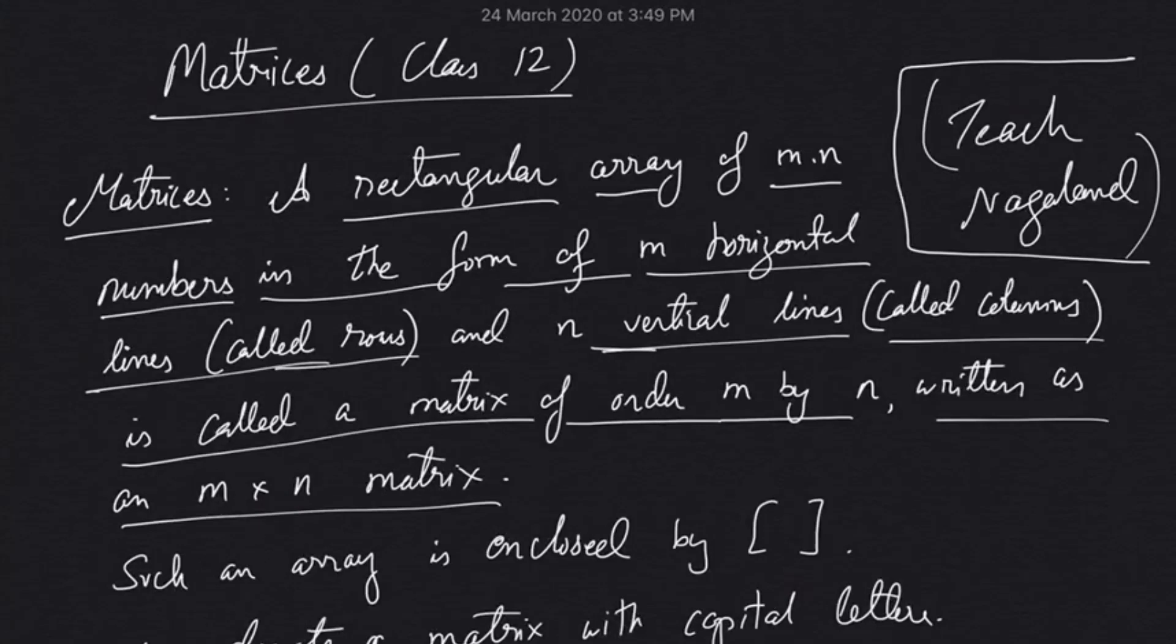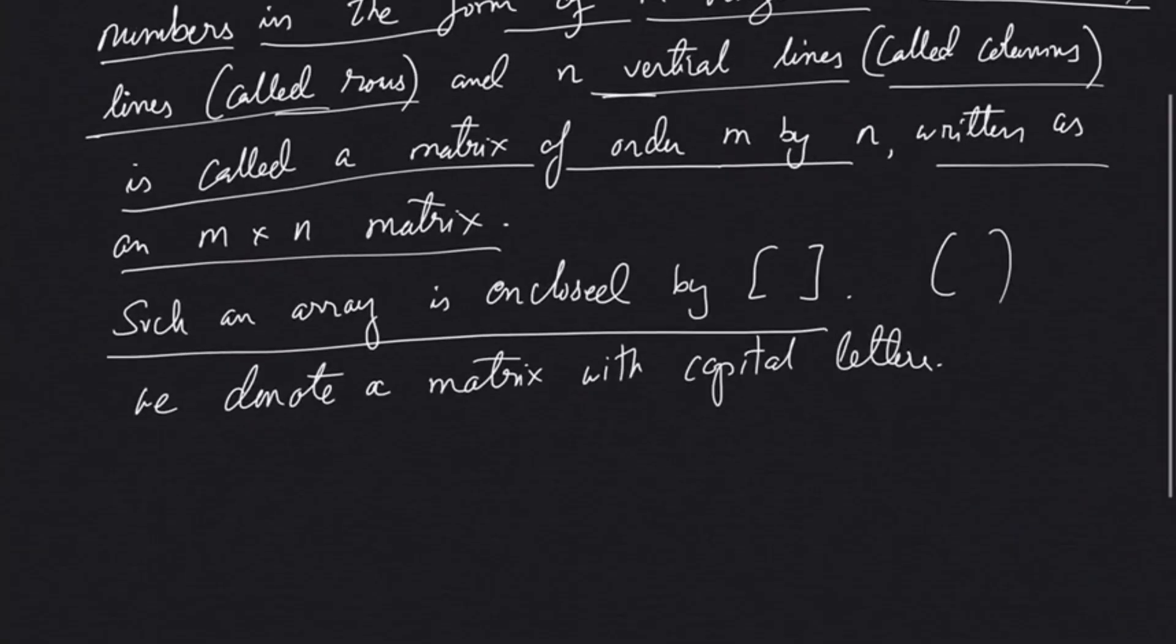Such an array is enclosed by brackets, or sometimes we can use round brackets also. We should note that we always denote a matrix with capital letters.